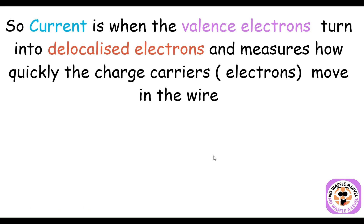When we're talking about valence electrons turning into delocalized electrons, current is basically measuring how quickly those charged carriers — those electrons — are moving in a wire. That's the key understanding from chemistry of where electrons come from: current is how fast they're moving in a wire.